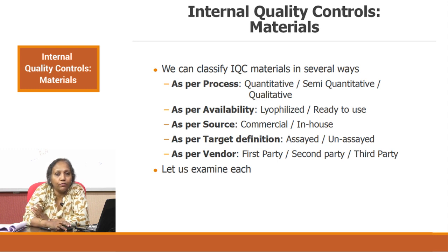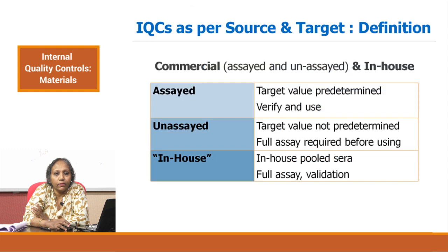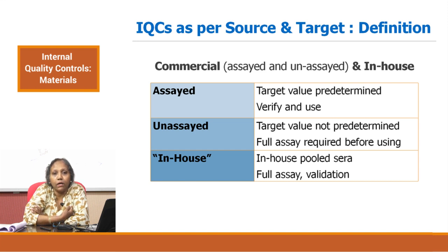We will examine each of these in detail. First, let us look at commercial versus in-house controls, and let us also combine the assayed and unassayed principles into this. When you are talking about commercial controls, that means you are getting the controls from a vendor. And when you say in-house, you mean you are making your pool sera in-house. Commercial controls can then be either assayed or unassayed.